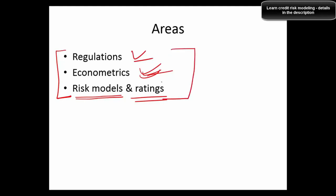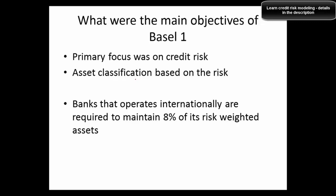Questions in interviews are mostly going to be from these three areas. One question that is often asked is: what were the main objectives of Basel 1? The primary focus was on credit risk. Asset classification was done based on risk for the first time. Banks that operate internationally are required to maintain eight percent of risk-weighted assets. These are important points to discuss if asked about Basel 1 objectives.